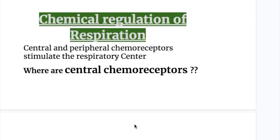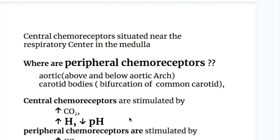Central and peripheral chemoreceptors stimulate the respiratory center. Central chemoreceptors are situated near the respiratory center in the medulla.